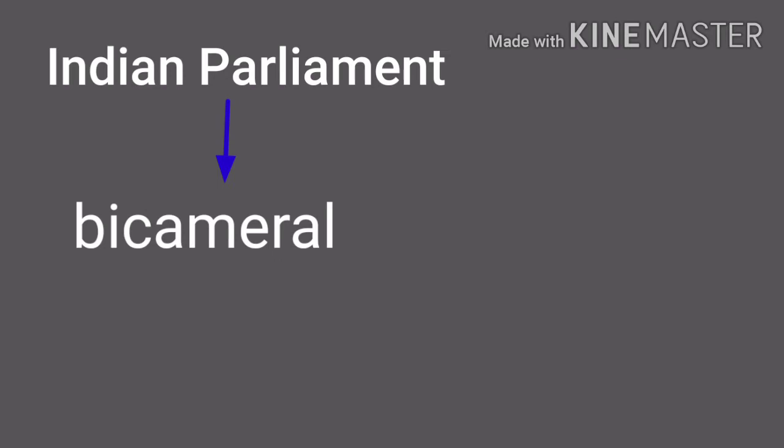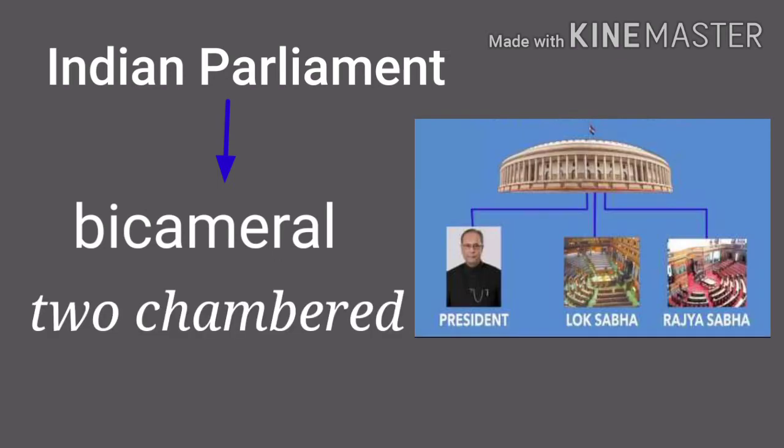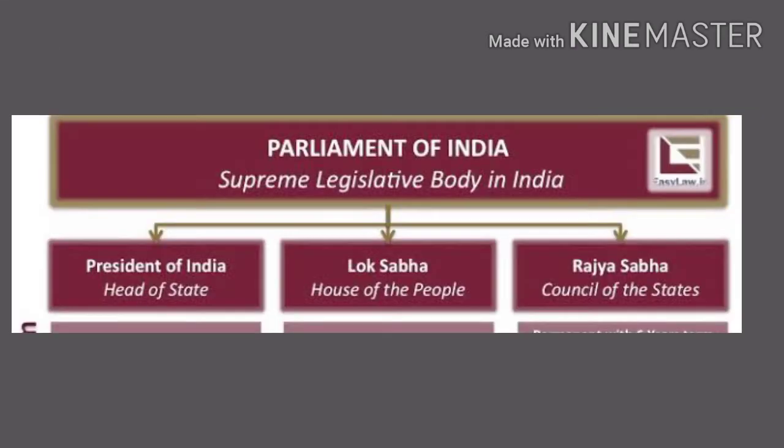Bicameral means having a system dealing with two chambers. 'Bi' stands for dual and 'Camera' is the Latin term which means chambers. It consists of the two houses — Rajya Sabha and Lok Sabha — and the President of India. The Parliament makes laws with the help of both the chambers.